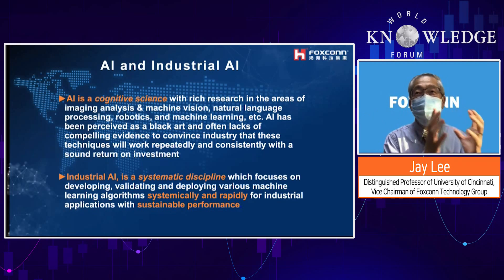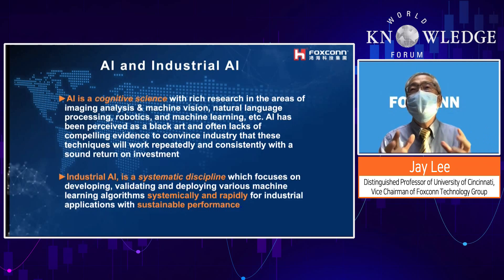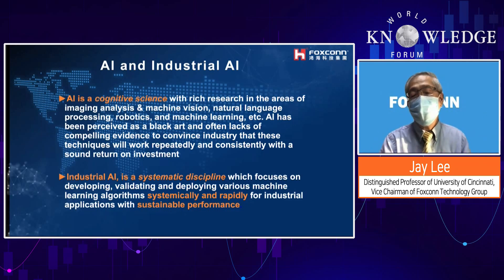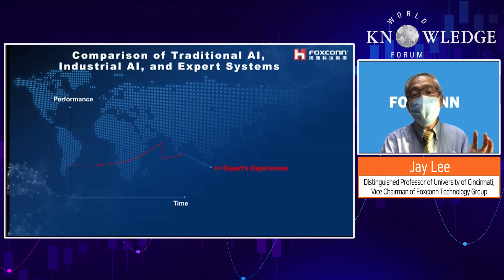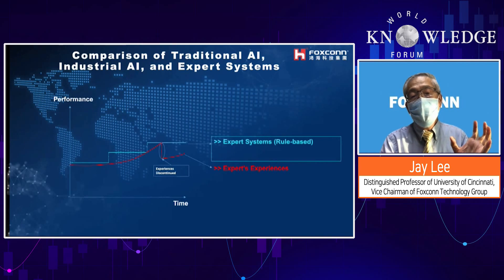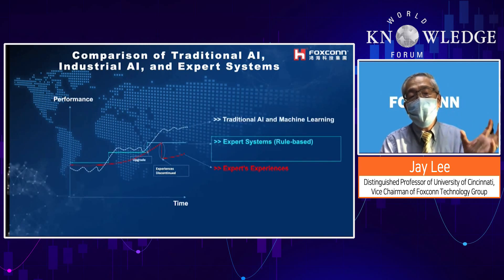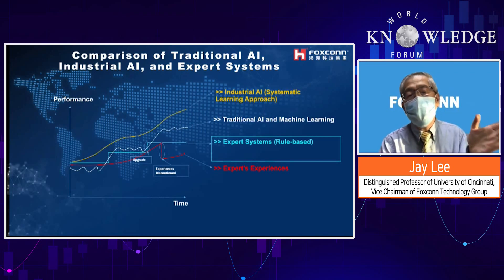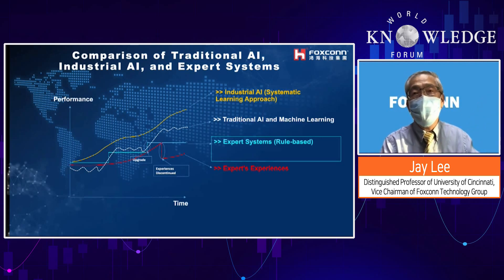You and I using the same data set should get the same result. We can use historical data to train the system continuously, rather than depending on recalibration. In a traditional expert system, we use rules. In a training-based AI system, we sometimes have to recalibrate. But industrial AI should dynamically retrain based on peer similarities and previous cases, so we don't have to manually retrain.